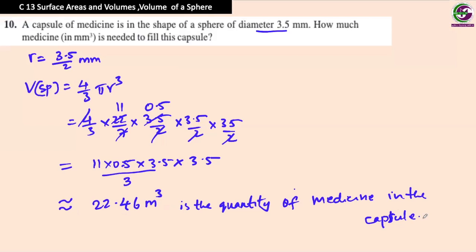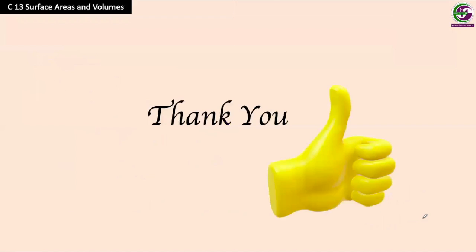Here we come to the end of Chapter 13. Keep practicing and memorize the rules of surface area and volume. Concentrate on two things in every question: first, make sure all units are the same and convert if needed; second, check whether the shape is a hemisphere or full sphere, and whether you are given diameter or radius. Wishing you all success. Good luck, take care, and see you soon.